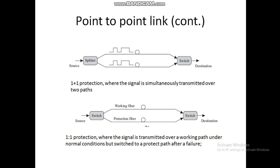In case of 1+1 protection, all channels are used simultaneously over two paths, as the signal is simultaneously transmitted over two paths. But in case of 1:1 protection, the signal is transmitted over a working path under normal condition. One advantage is that under normal operation, the protection fiber is unused and therefore it can be used to transmit low priority traffic.